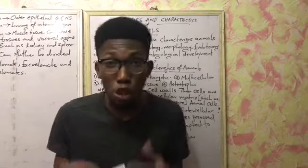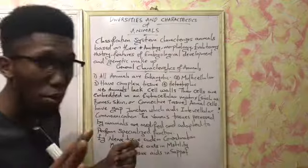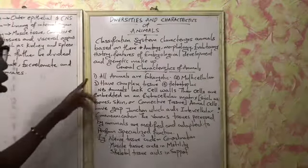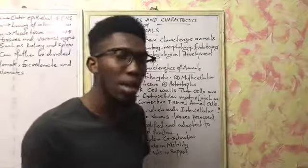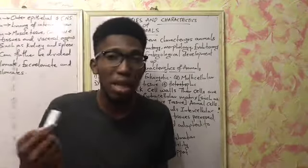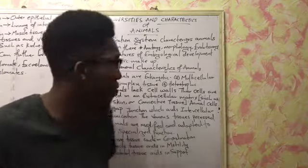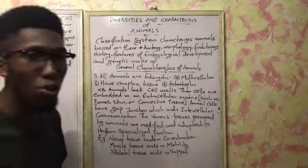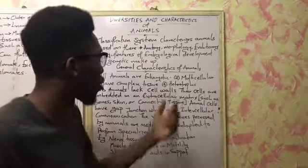And that's why they fall under the domain Eukarya, which I'll be talking about more later. Animals are also multicellular — meaning they are not one-celled; they have many cells, which leads to organization of life. They also have complex tissues.